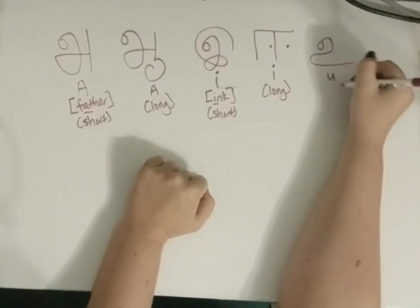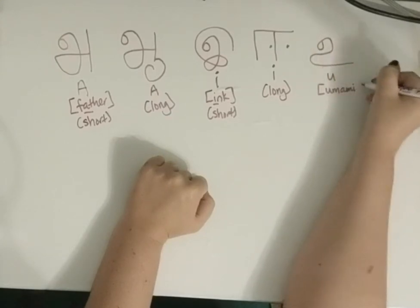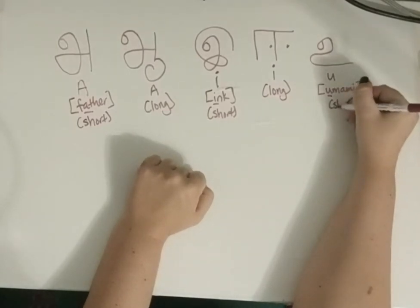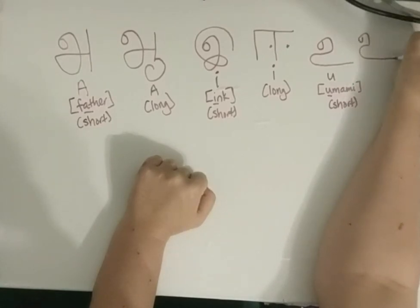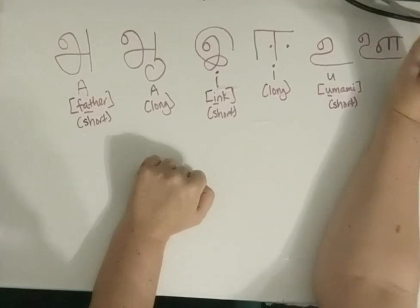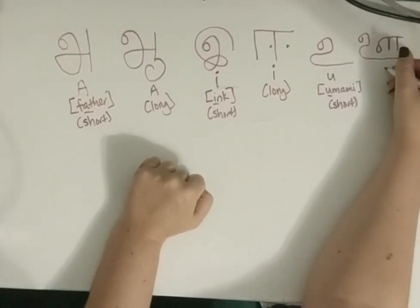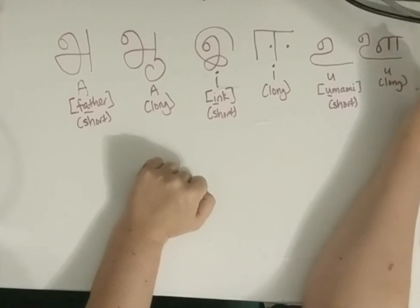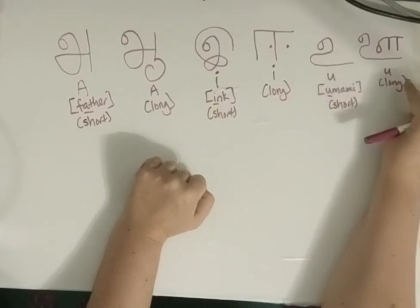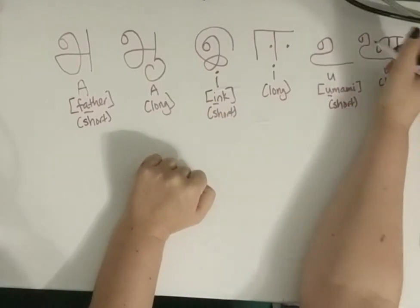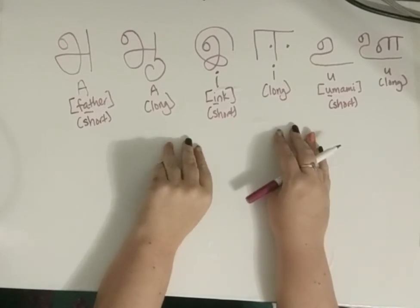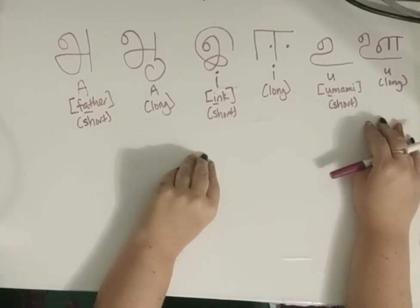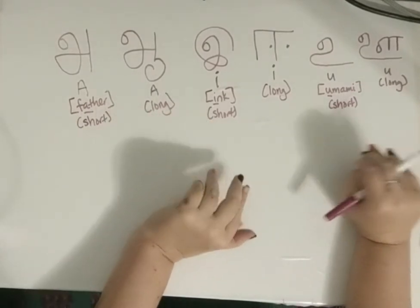Moving on to U — this is U as in 'umami,' the short version. And here's the long version. So we have short U and long U. As I always say, if you haven't seen a language video of mine before, I can't draw in a straight line and I can't draw anything the same size, so expect that. Moving on to the E's — this is E as in 'elephant,' the short version.